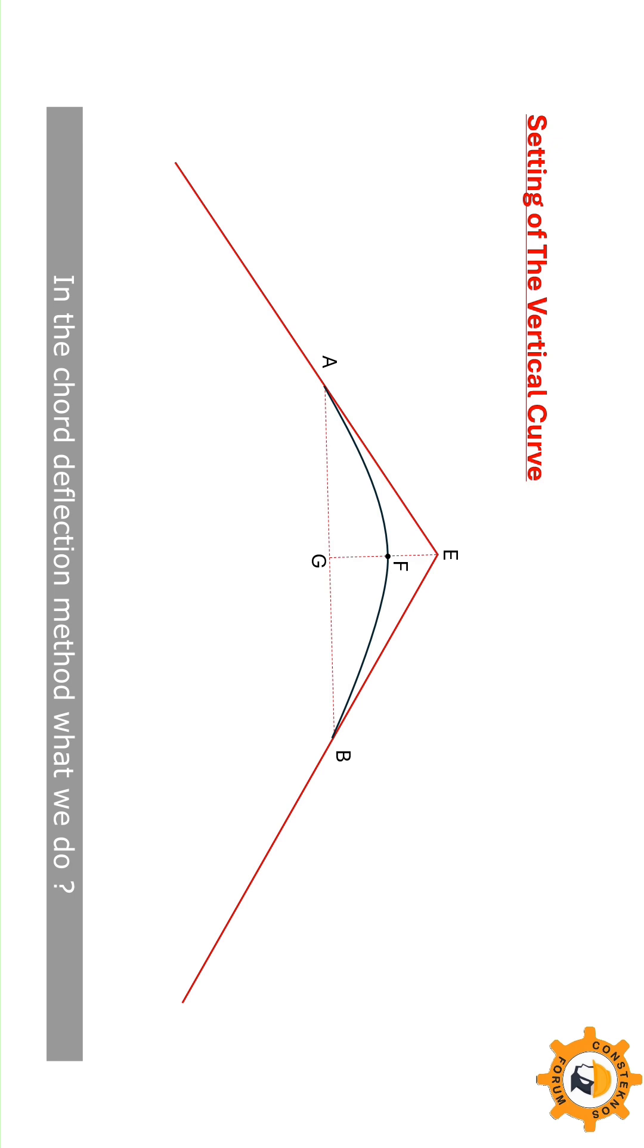In the chord deflection method, you find the RL of these points C and D on the chord, and then you find out the chord deflection on CCO and DDO.